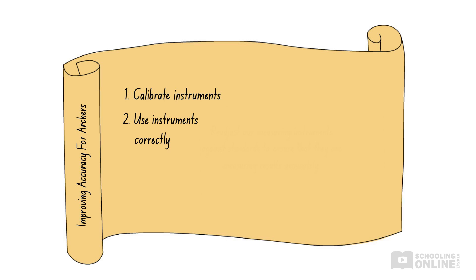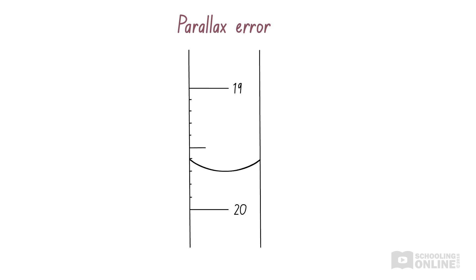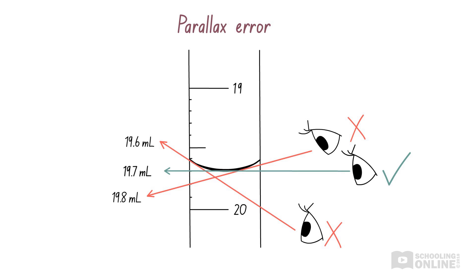Another way to reduce systematic error is to ensure that we are using and reading our instrument correctly. For example, if you are measuring the temperature of a solution and you stick the thermometer into the beaker upside down, there's absolutely no way your result will be accurate since it's measuring the wrong thing. Another example is parallax error, which we mentioned before. This occurs when we read the wrong value because we are not looking from the correct angle. For the measurement to be accurate, we must always read the instrument from eye level.